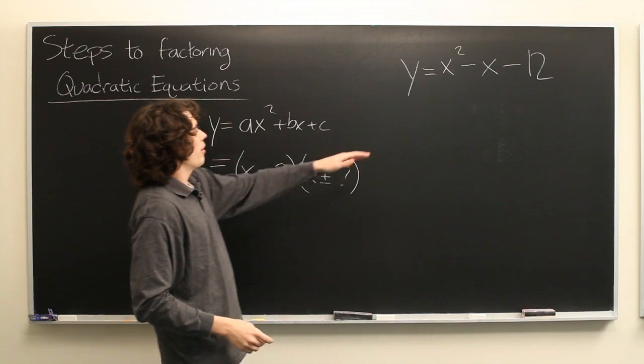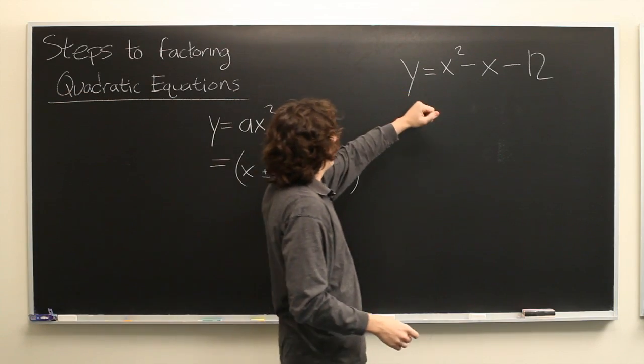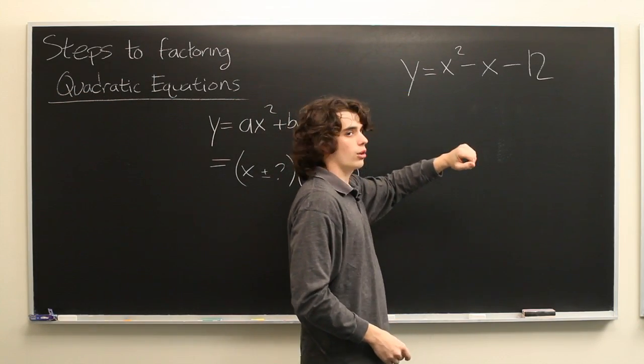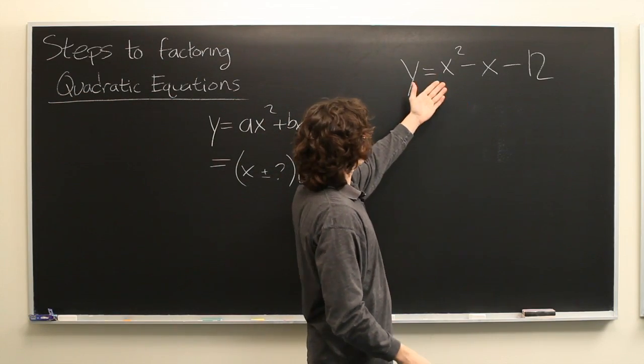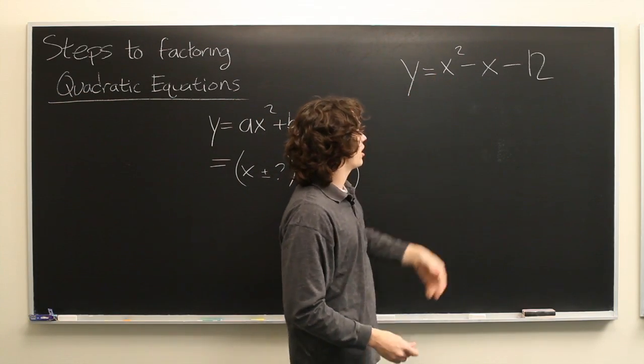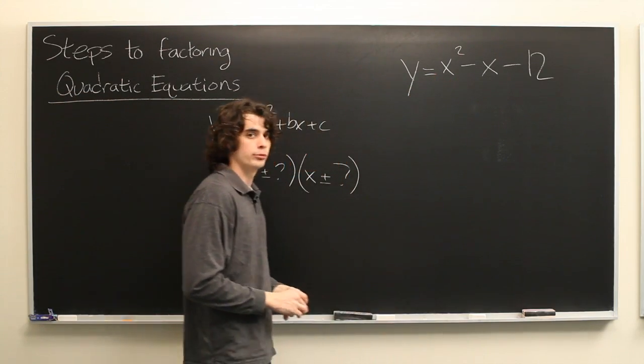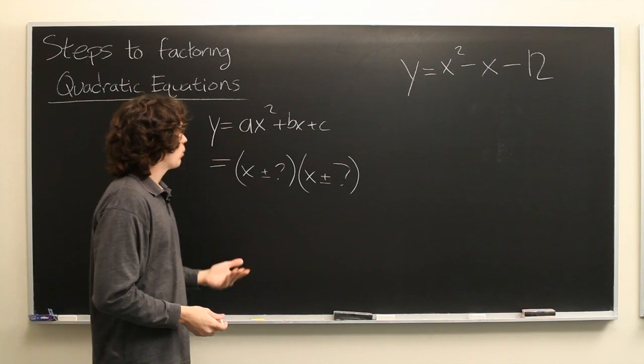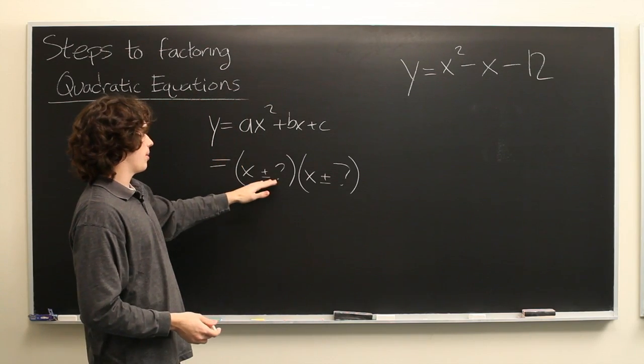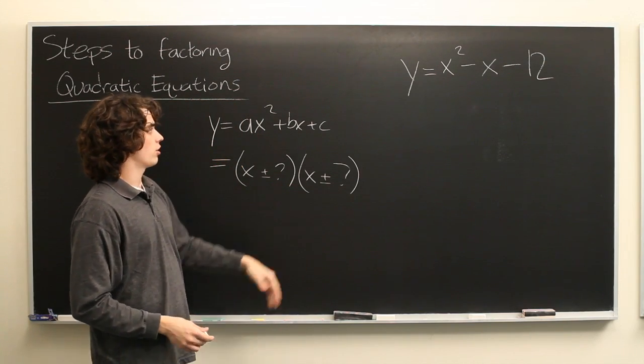Here we have an example quadratic equation: y equals x squared minus x minus 12, and we want to figure out the steps to write it in such a form.